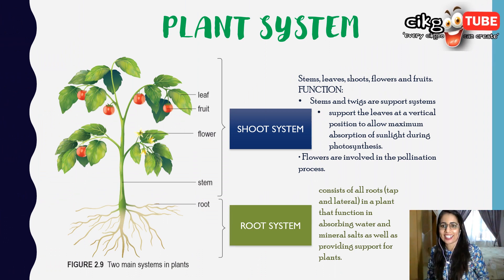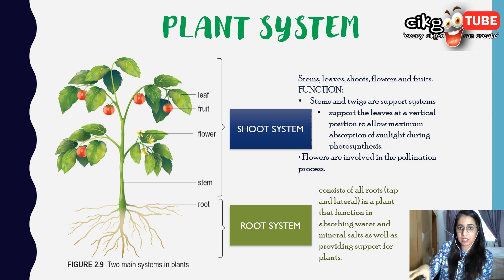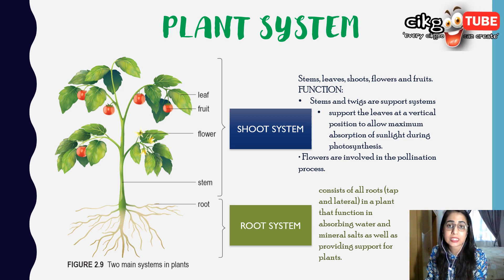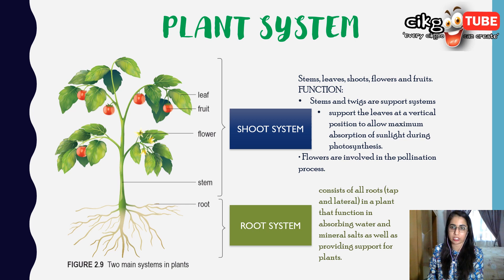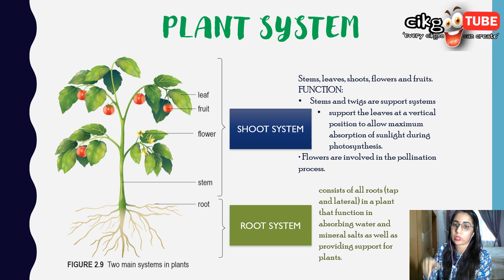Just like humans have about 11 systems, plants also have systems: the shoot system and the root system. The shoot system includes stems, leaves, flowers, and fruits. Stems and twigs support leaves in a vertical position for maximum sunlight absorption during photosynthesis, while flowers are involved in the pollination and reproduction process. The root system consists of tap roots and lateral roots, and functions to absorb water and mineral salts and to support the plant.